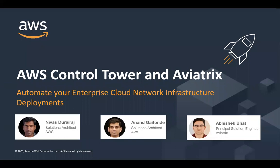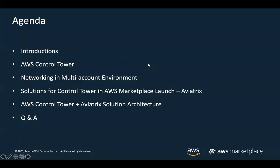A quick note before we get into the agenda: the slide deck and the recording of the webinar will be sent out in an email after we finish. Our agenda for today's webinar: we'll start with covering AWS Control Tower, the multi-account environment, and best practices. We'll then talk about networking challenges, solutions for Control Tower in the AWS marketplace, and specifically the network orchestration solution with Aviatrix. We'll do a quick demo and open up for Q&A.